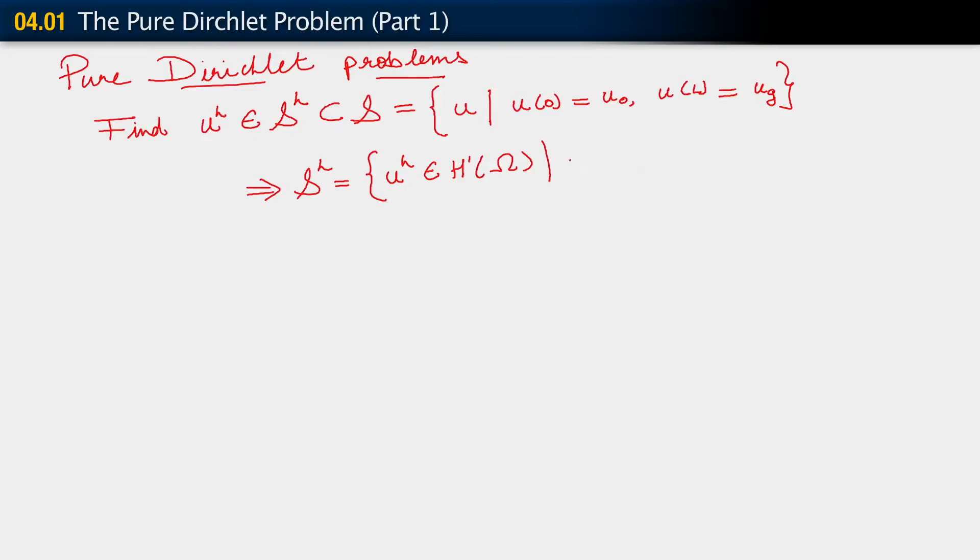Like we have considered for our finite dimensional weak form when we consider Dirichlet and Neumann data. So U_H belongs to H^1 on omega such that U_H at 0 equals U_0, and U_H at L equals U_G.